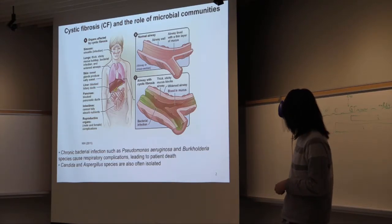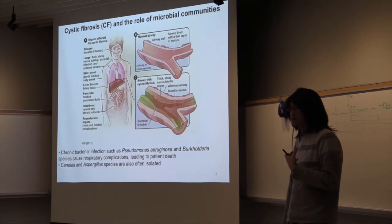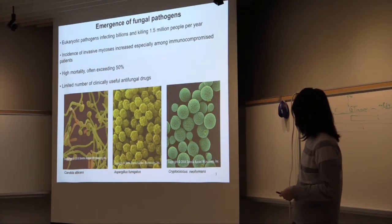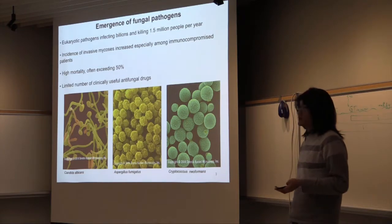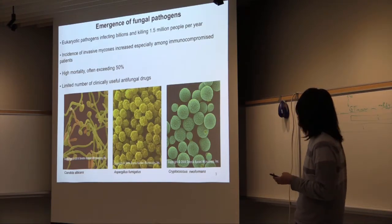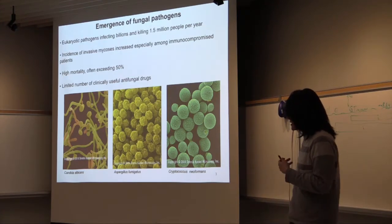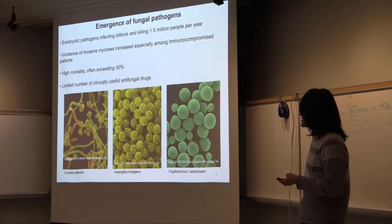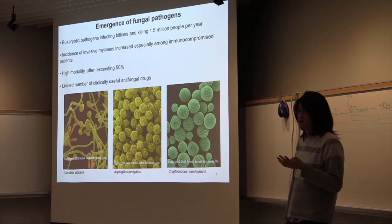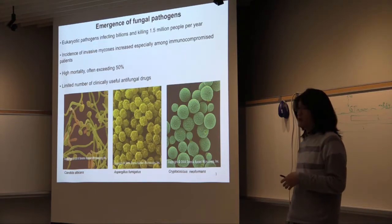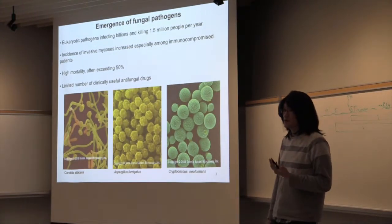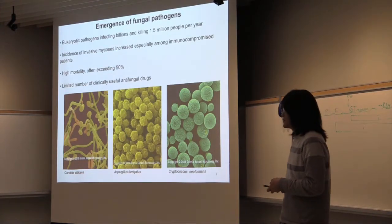Along with these bacterial counterparts, fungal microbes such as Candida and Aspergillus species are also often isolated from patient samples, which I'll be focusing on today. Fungal pathogens are eukaryotic pathogens, and worldwide they affect billions of people and kill around 1.5 million people per year. Cases of invasive mycosis have increased, especially among immunocompromised patients such as those who have gone through immunosuppressant therapies after organ transplant or patients affected by HIV. With a high mortality rate often exceeding 50% and a very limited number of clinically relevant drugs, these pathogens pose a significant threat in clinical environments.